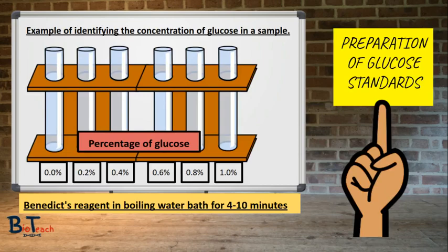The theory behind this is probably better understood with an example. Here we've got two racks of test tubes, each one with a different concentration of glucose. Solutions containing a range of known concentrations are prepared — these are what we call glucose standards, ranging from no glucose in the 0% sample to 1.0% glucose. They're called standards as we know exactly the concentration of glucose in them. We carry out the Benedict's test on each of these test tubes by adding Benedict's solution and heating in a water bath, observing a colour change in the ones ranging from 0.2% to 1.0% glucose. Remember, the higher the concentration of glucose, the more brick red the colour change is.